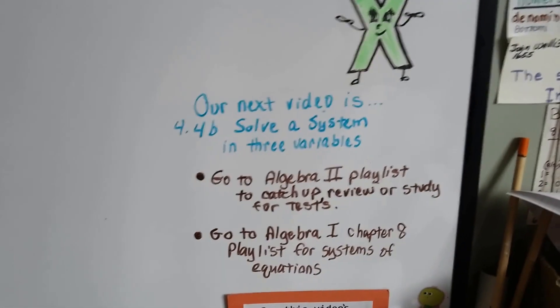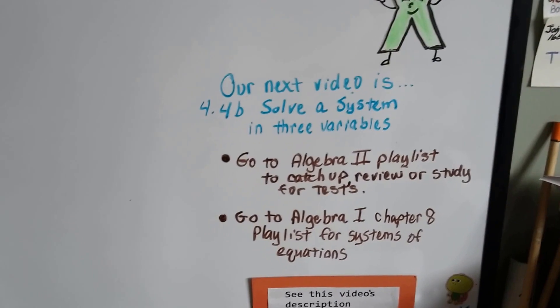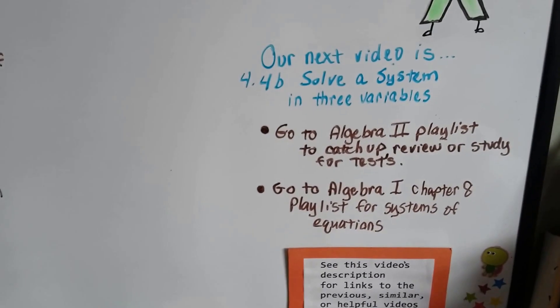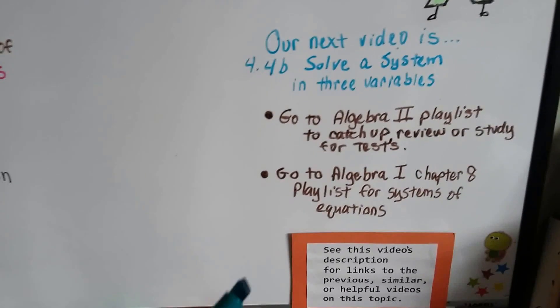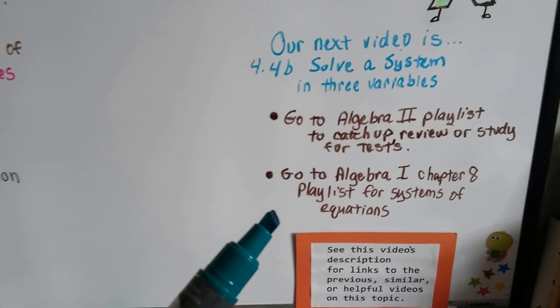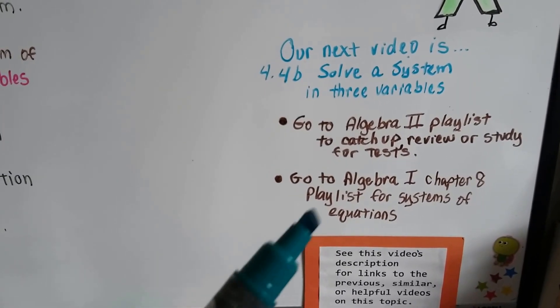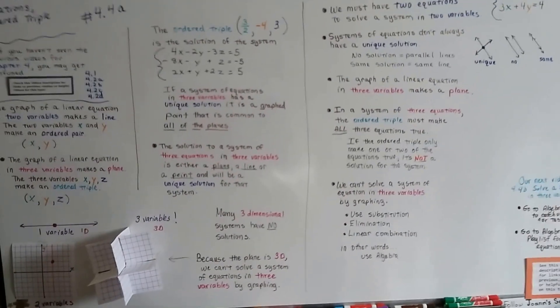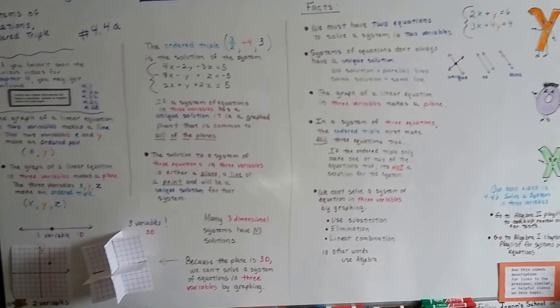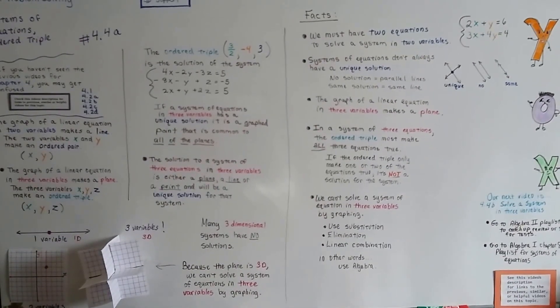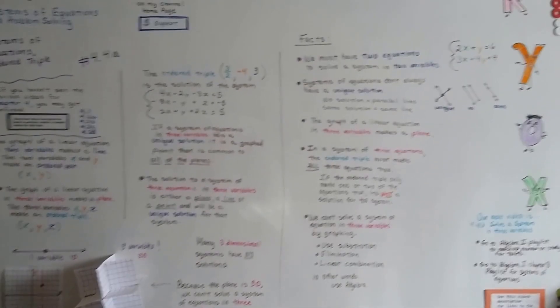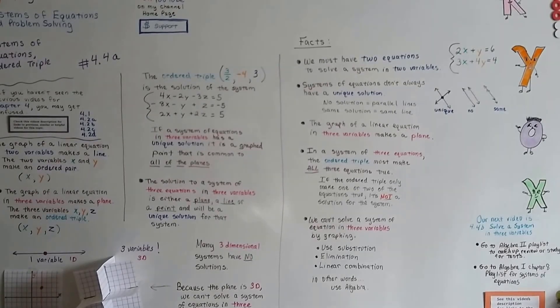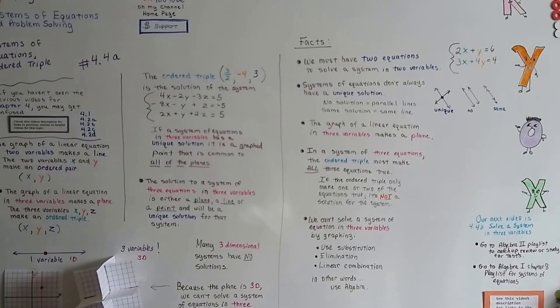Our next video is 4.4b, and we're going to talk about how to solve a system in three variables. I'm going to add this video to the Algebra 2 playlist so you can use it for review or studying, and I'll put a link to the Algebra 1 Chapter 8 playlist for systems of equations in the description. You now know what an ordered triple is and what three variables would be graphed on. I'll see you in the next video — keep your chin up, we can do this. Bye.